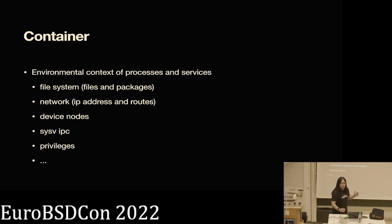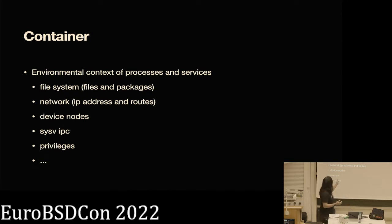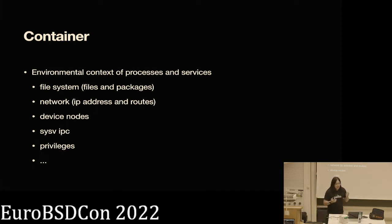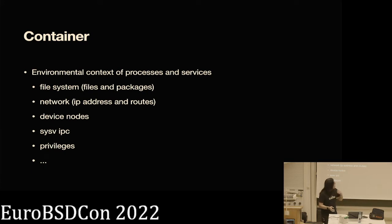How I define a container: a container is an environmental context or execution context. It controls how a process in an operating system accesses resources or sees its privilege domain. One of the most obvious is the file system — this is how the process in this container finds its shared libraries. It also includes things like networks, because a computation is kind of useless if you can never have side effects. There are also states not in the file system that are part of a container.